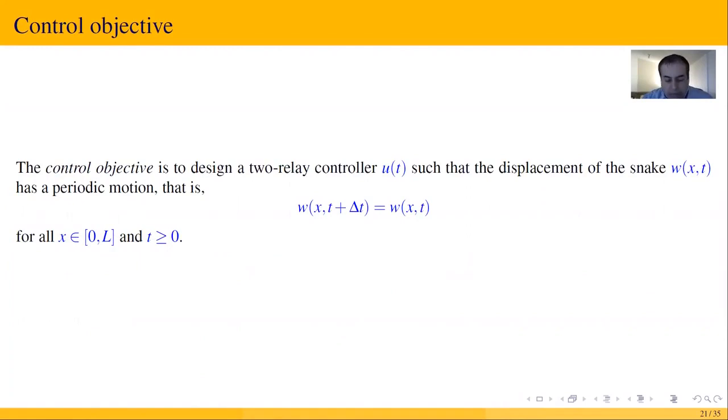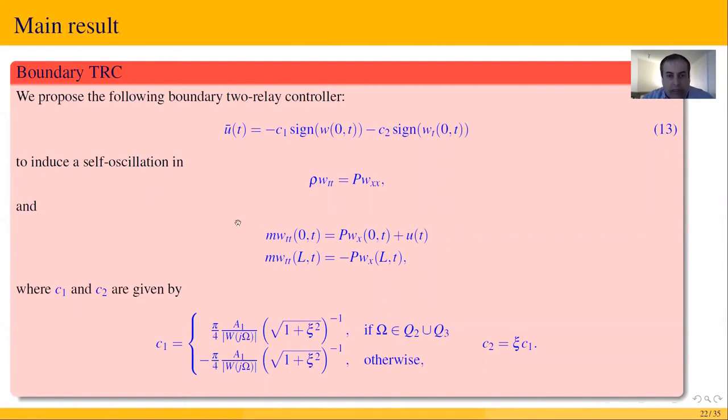The main result is summarized in this slide. Here, u-bar is the two-relay controller. Here is the dynamic model of the snake, and c1 and c2 are solutions.